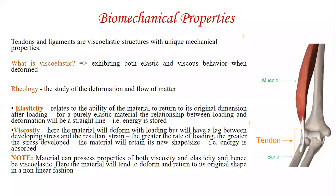Now we will discuss the biomechanical properties of tendons and ligaments. They are basically viscoelastic in nature, which means that they will deform and return to their original shape in a non-linear manner.